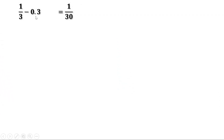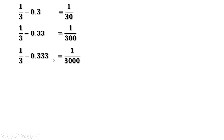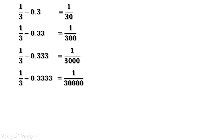So we have: 1 by 3 minus 0.3 equals 1 by 30; 1 by 3 minus 0.33 equals 1 by 300; 1 by 3 minus 0.333 equals 1 by 3000. Without calculating, we can write 1 by 3 minus 0.3333 equals 1 by 30000. We can see that when we go downwards, the difference becomes smaller and smaller. 1 by 300 is smaller than 1 by 30, 1 by 3000 is again smaller than 1 by 300, and 1 by 30000 is still smaller than 1 by 3000.